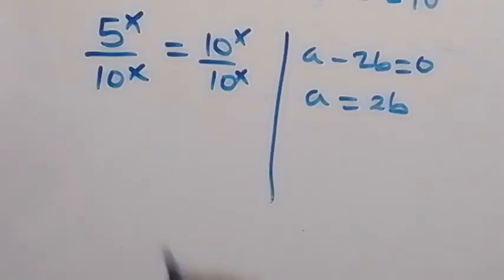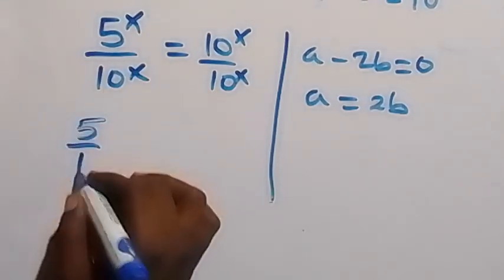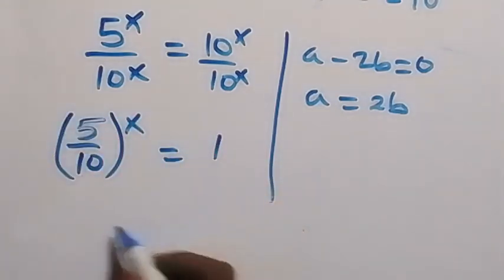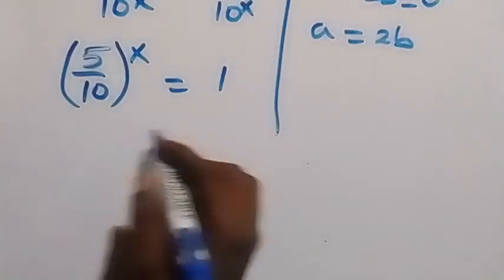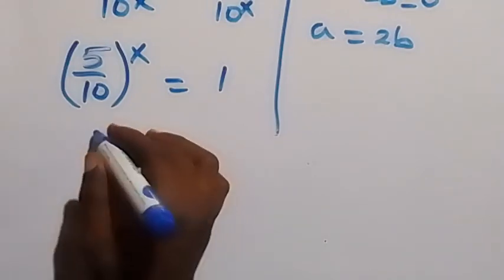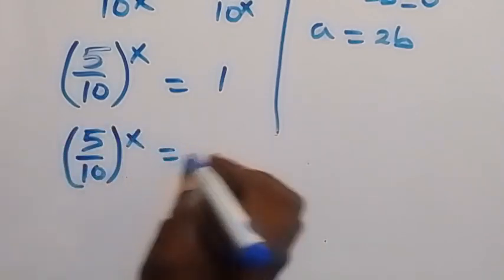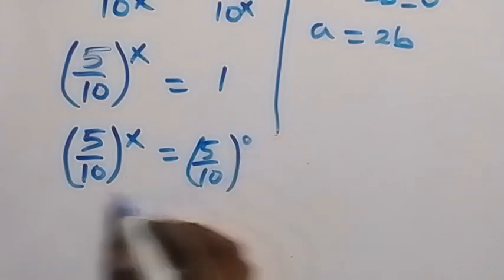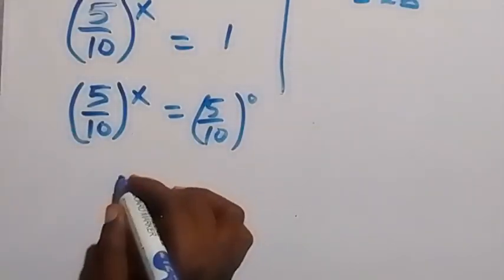We can write this as 5 over 10 raised to power x equals 5 over 10 raised to power zero, since any number raised to power zero is 1. We now have the same base on both sides, so we equate the powers, and x equals zero.